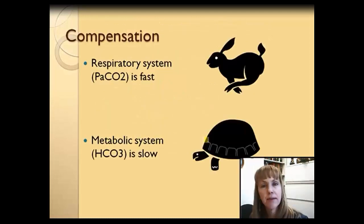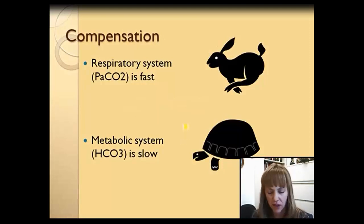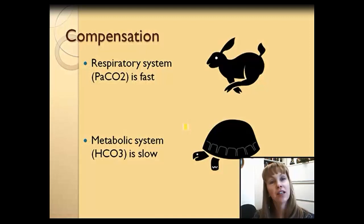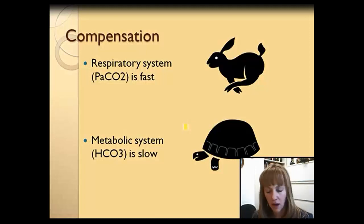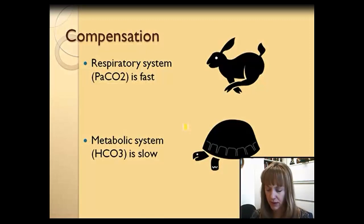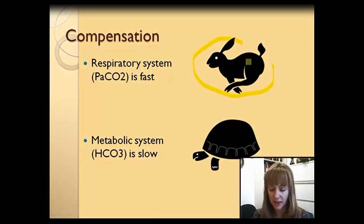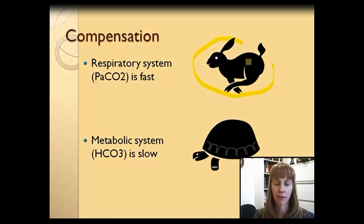The body attempts to compensate by using respiratory or metabolic systems, depending on the situation. For example, the body compensates for a primary respiratory disturbance, such as respiratory acidosis, by inducing a metabolic alkalosis. Not all attempts to compensate are equal. The respiratory system is efficient and quick — it can compensate for metabolic disturbances fairly quickly. Whereas the metabolic system, working through the kidneys, can take hours and even up to days to compensate for an imbalance.